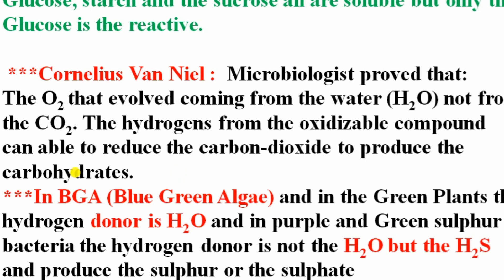Blue-green algae and green plants both use water (H₂O) as the donor of hydrogen and electrons. However, in purple and green sulfur bacteria, the hydrogen donor is not H₂O but H₂S (hydrogen sulfide), and they produce sulfur and sulfate as byproducts — not oxygen.